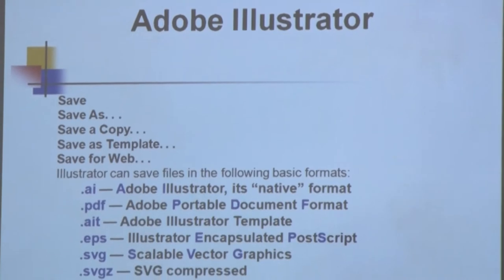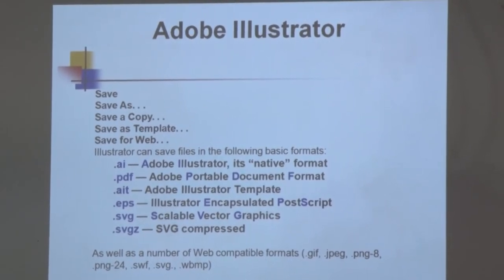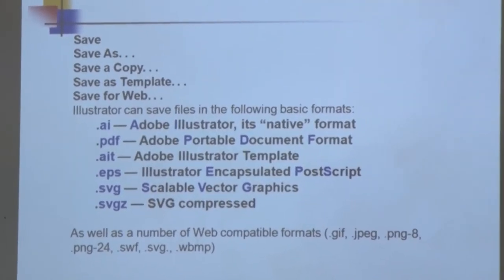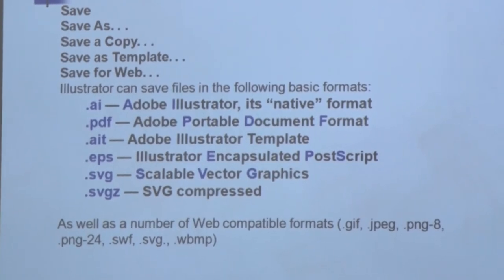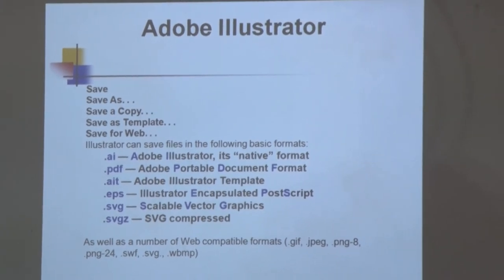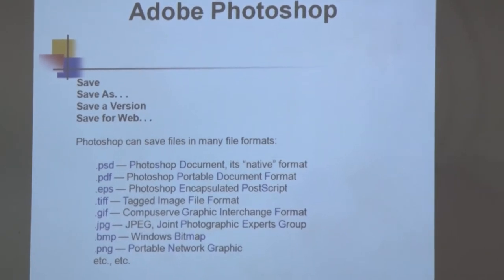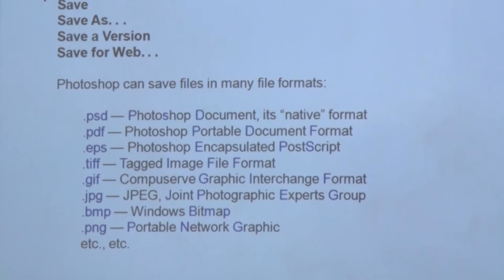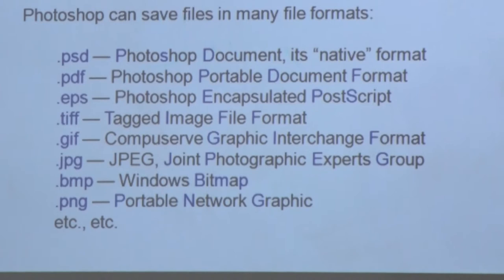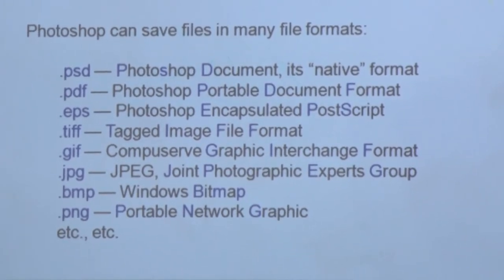There are other file formats. For example, AI is Adobe Illustrator, .pdf is Portable Document Format, .eps is Encapsulated PostScript, .svg is Scalable Vector Graphics. Then Photoshop formats: .psd is Photoshop Document, .gif is Graphics Interchange Format, .jpg is Joint Photographic Experts Group, .bmp is Windows Bitmap, and .png is Portable Network Graphics.